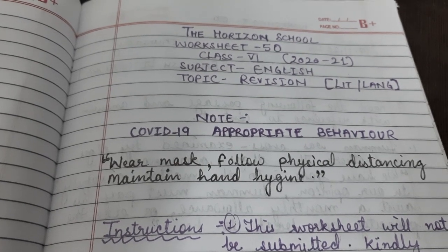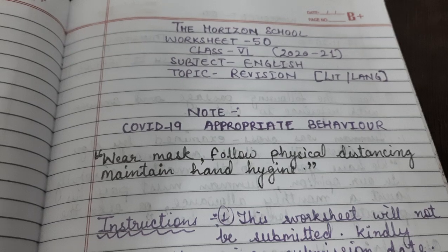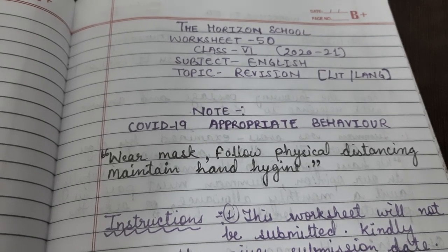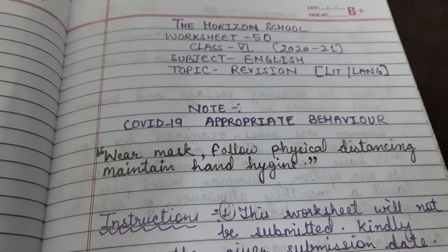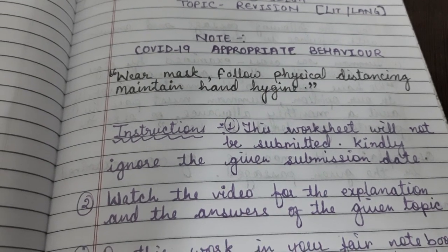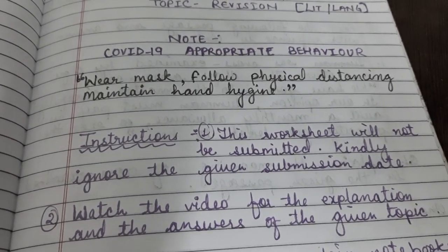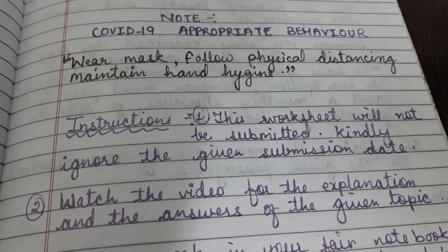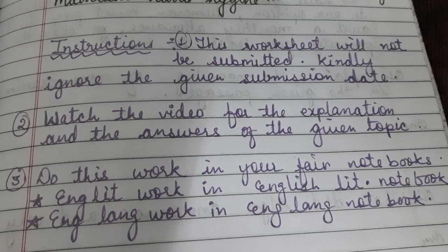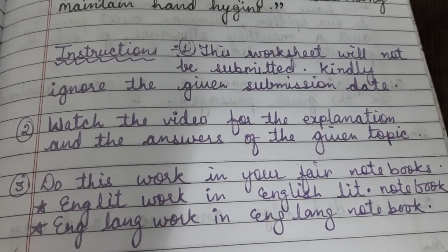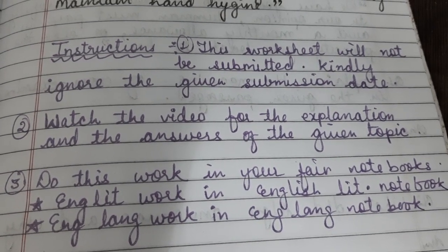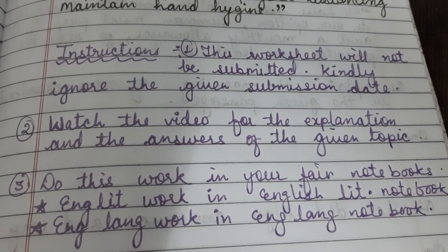Now let's begin this worksheet. This is Worksheet Number 50 and today's topic is Revision. I would like to give you the revision of Literature and Language, which is going to be helpful for your Unit 2 exams. As per instructions, this is a non-submission worksheet and will not be submitted — ignore the submission date. Literature work you will do in your Literature notebook and Language work in your English Language notebook.